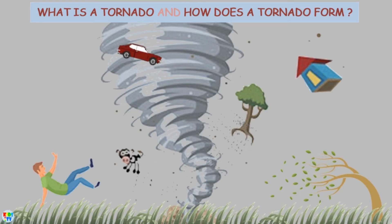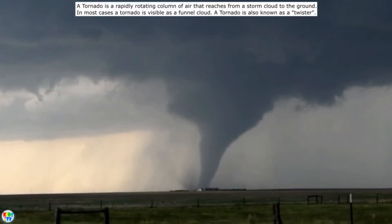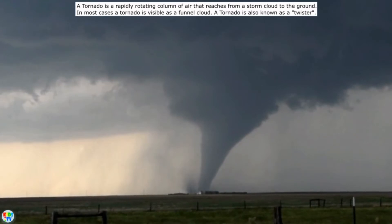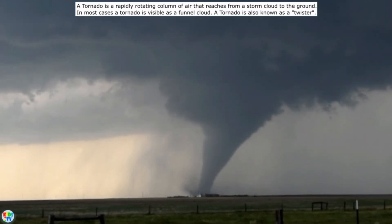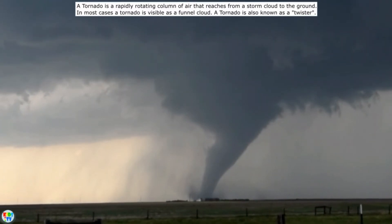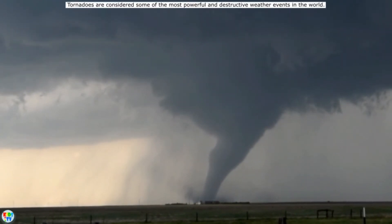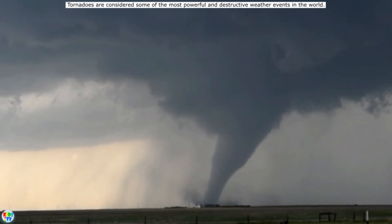A tornado is a rapidly rotating column of air that reaches from a storm cloud to the ground. In most cases, a tornado is visible as a funnel cloud. A tornado is also known as a twister. Tornadoes are considered some of the most powerful and destructive weather events in the world.